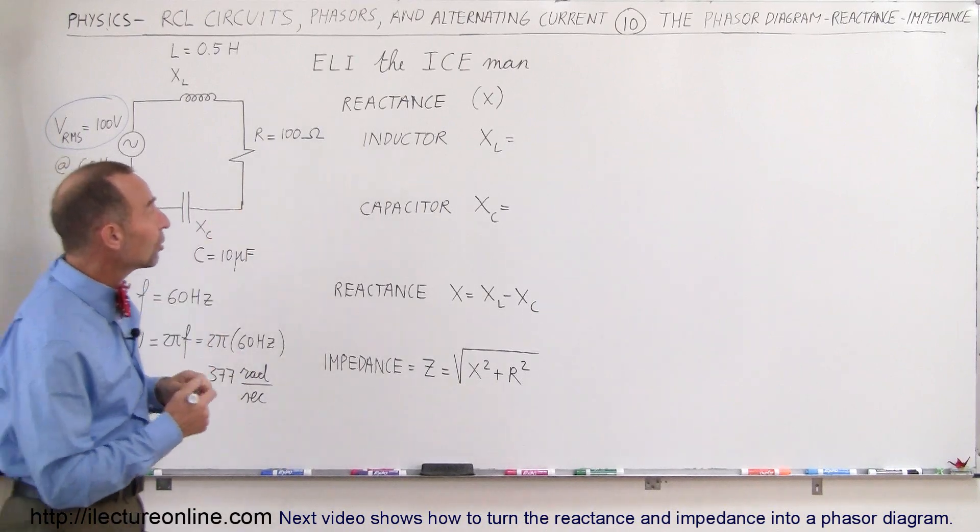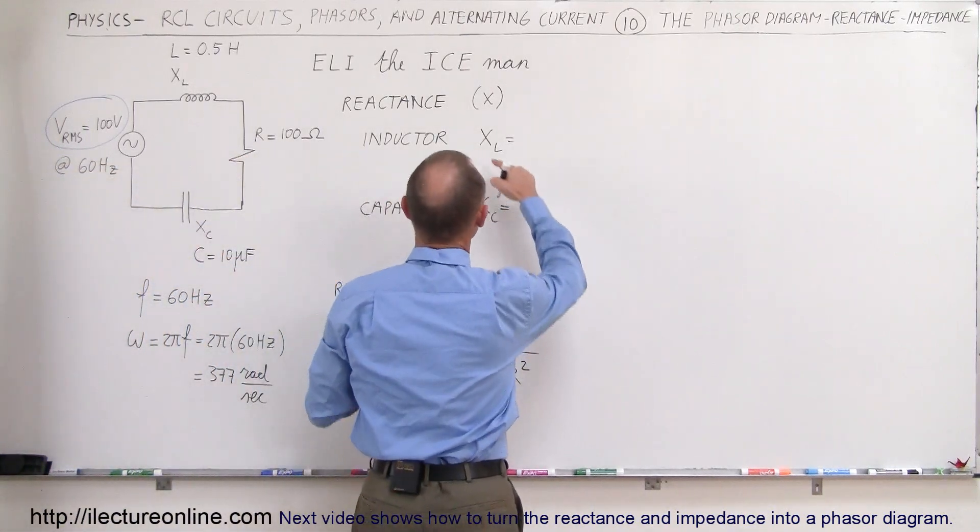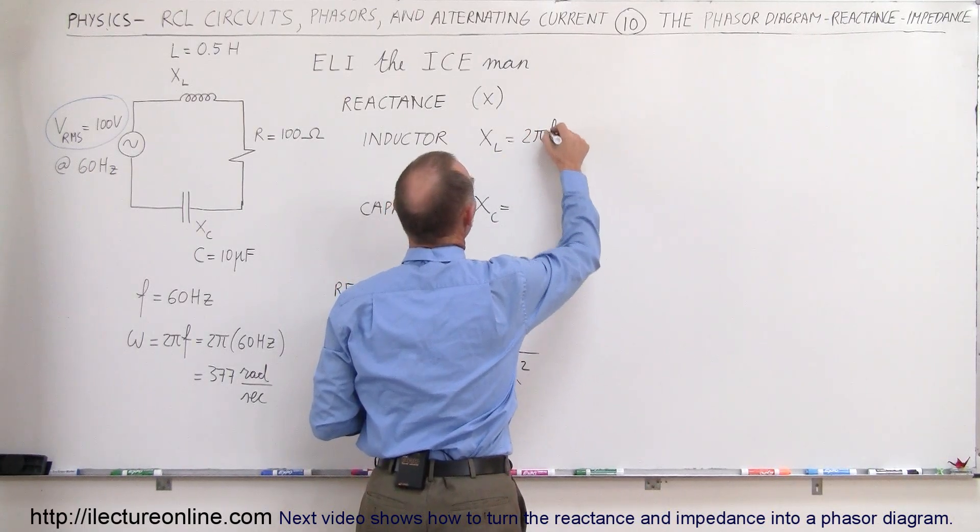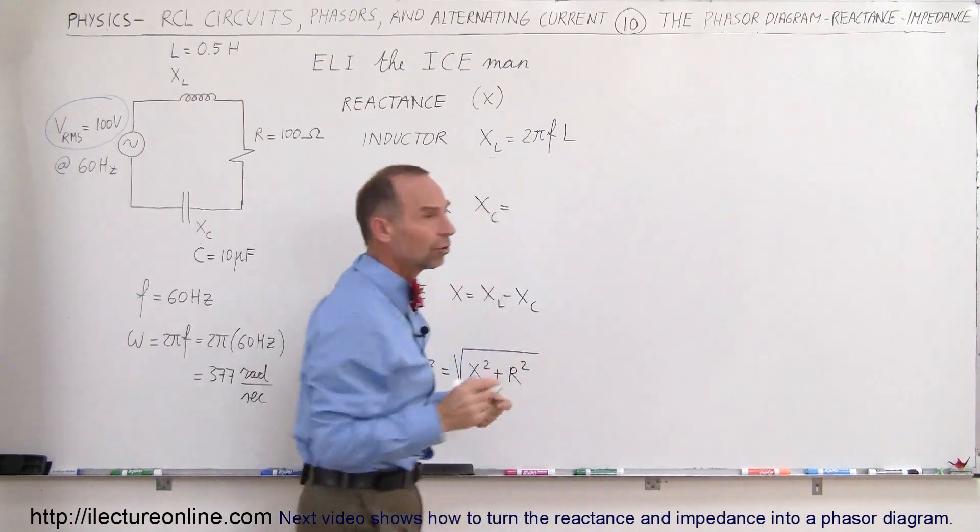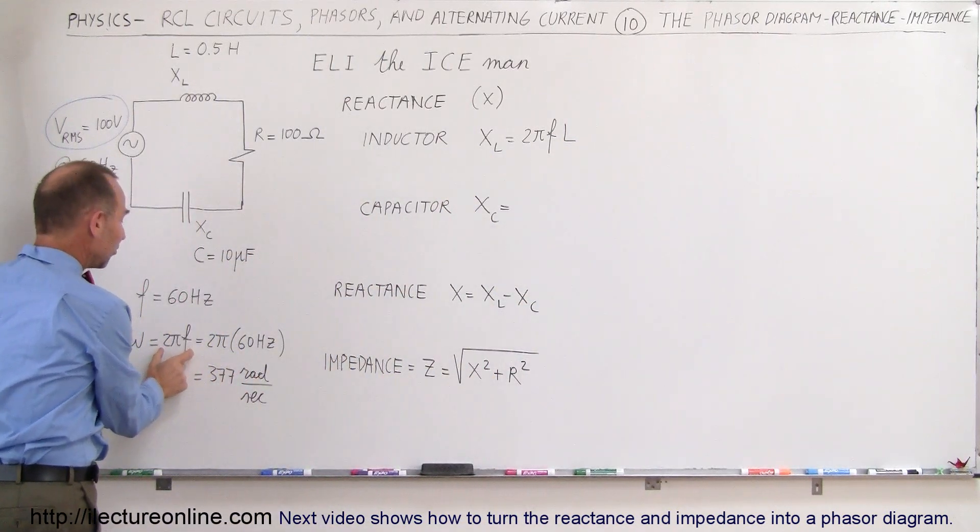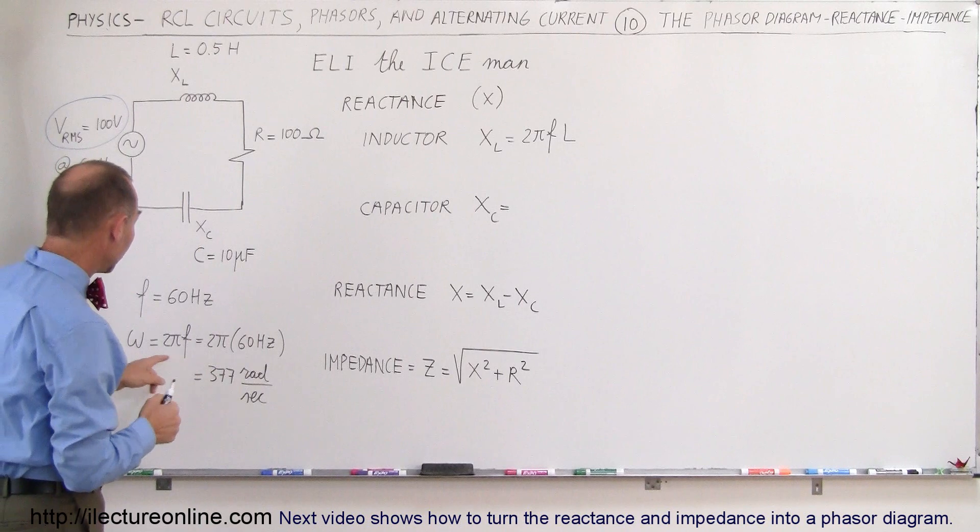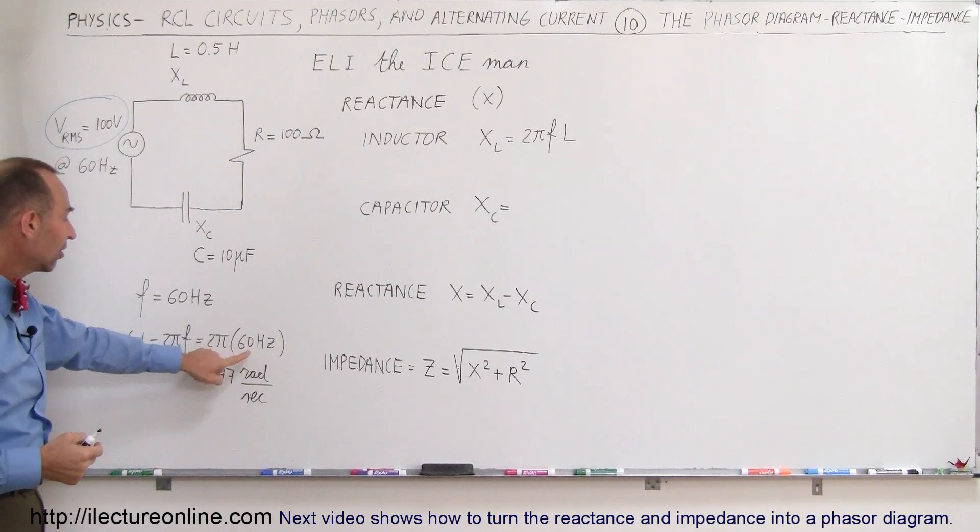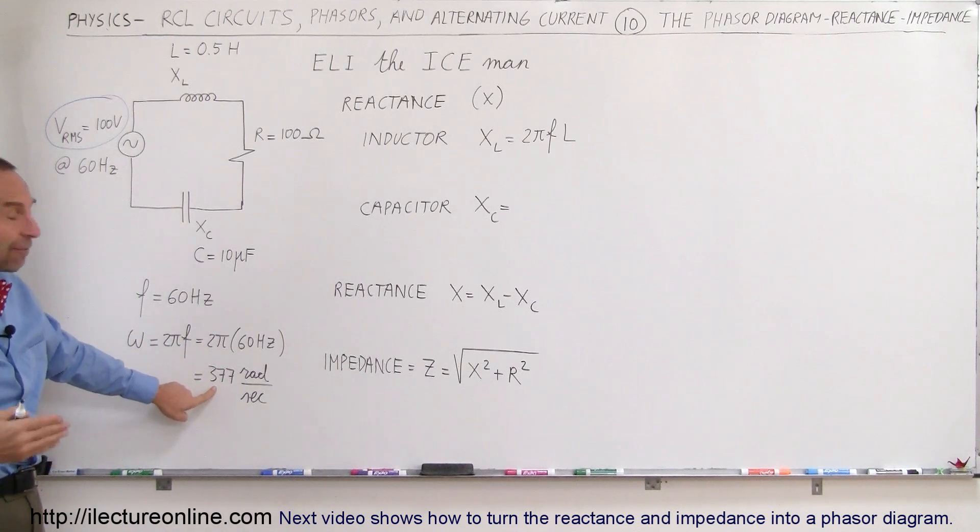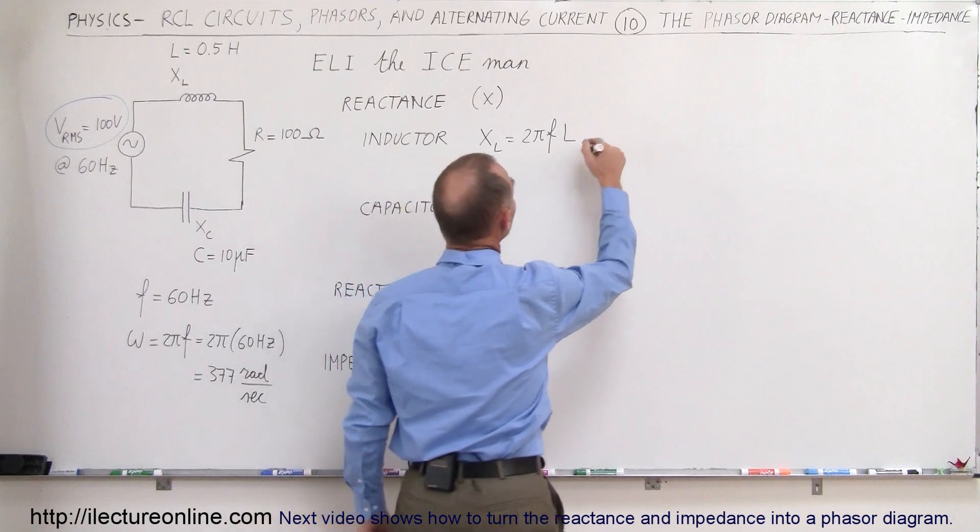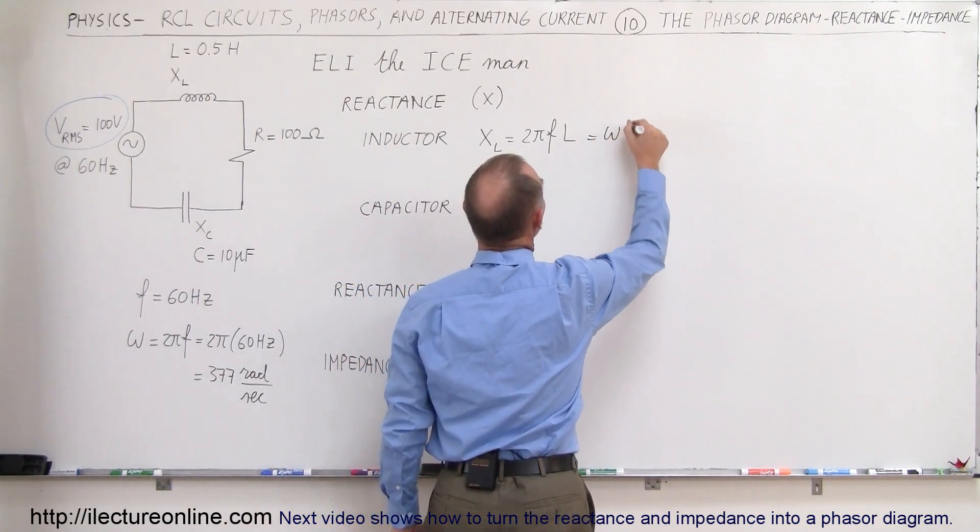Well, to find that, we use the equation X sub L, which is the reactance of the inductor, is equal to 2πF times the inductance of the inductor. Sometimes we can write the oscillation frequency of the voltage source in terms of radians per second, the angular frequency. So 2π times 60 converts to 377 radians per second. So instead of writing 2πFL, we can write it as ωL, where omega is simply the radial frequency of the oscillations.